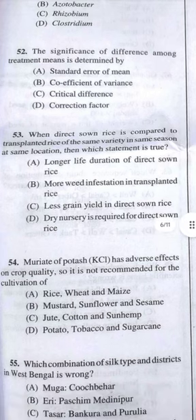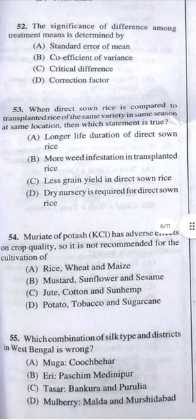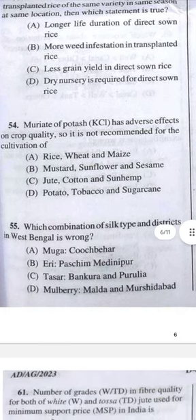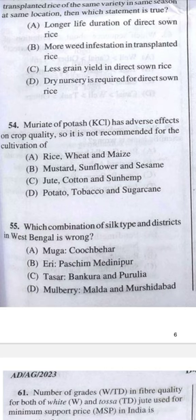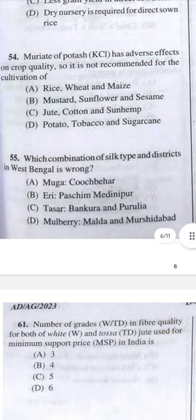Question 54: Muriate of potash has adverse effect on crop quality, so it should not be recommended for cultivation of D — potato, tobacco, and sugarcane. Question 55: Which combination of silk type and district in West Bengal is wrong? Answer B — please cross-check as I am not fully sure.